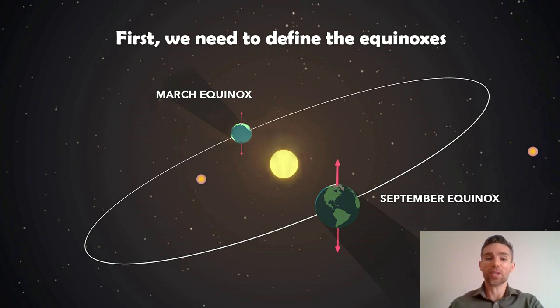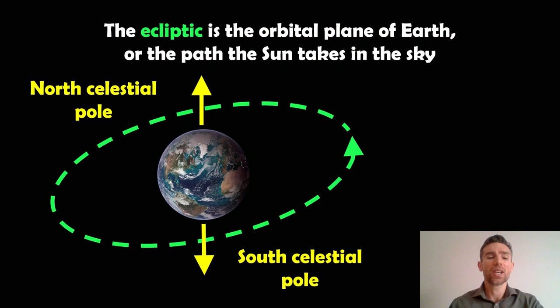It's actually perpendicular to the line if you draw it from the Sun to the Earth. It means our days and nights are actually the same length at these two locations on the orbit. So we need to define what they actually are first. To do that, we first need to have a look at the ecliptic.